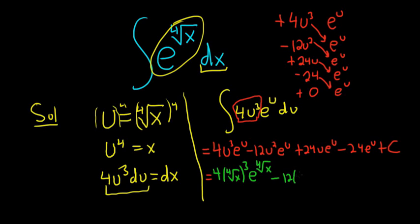Minus 12. And then u is the fourth root of x squared, e to the fourth root of x. Then plus 24. Fix my little root symbol there. 24 fourth root of x e to the fourth root of x. Then minus 24 e to the fourth root of x plus c.